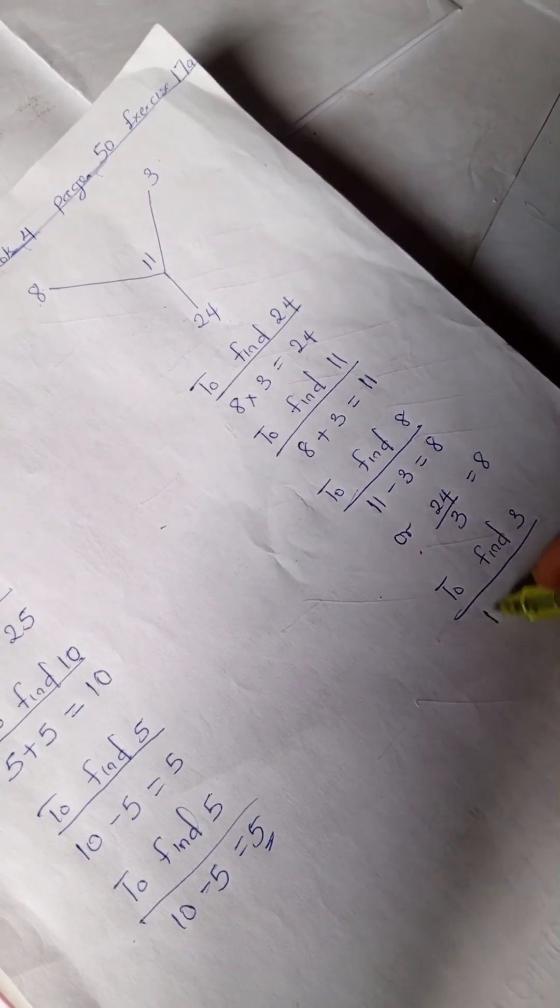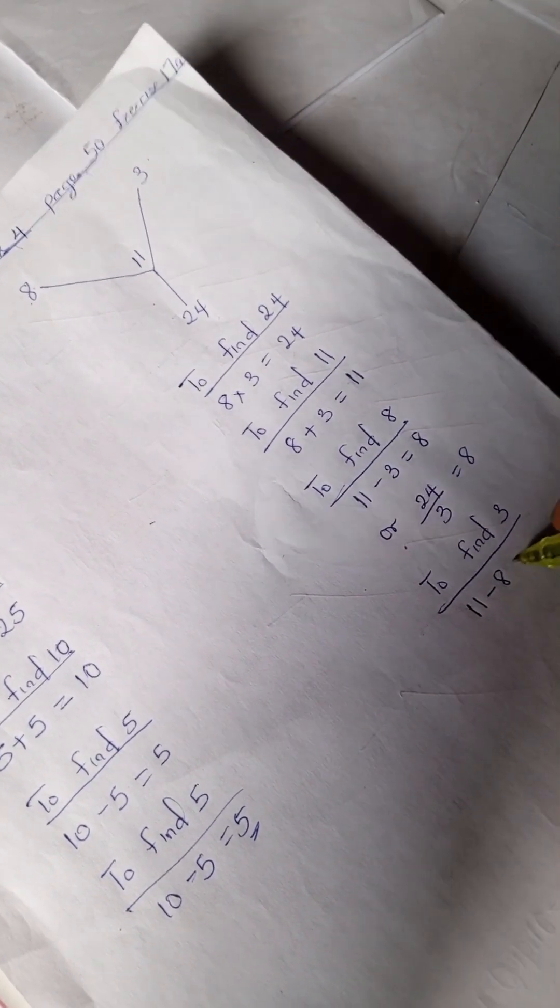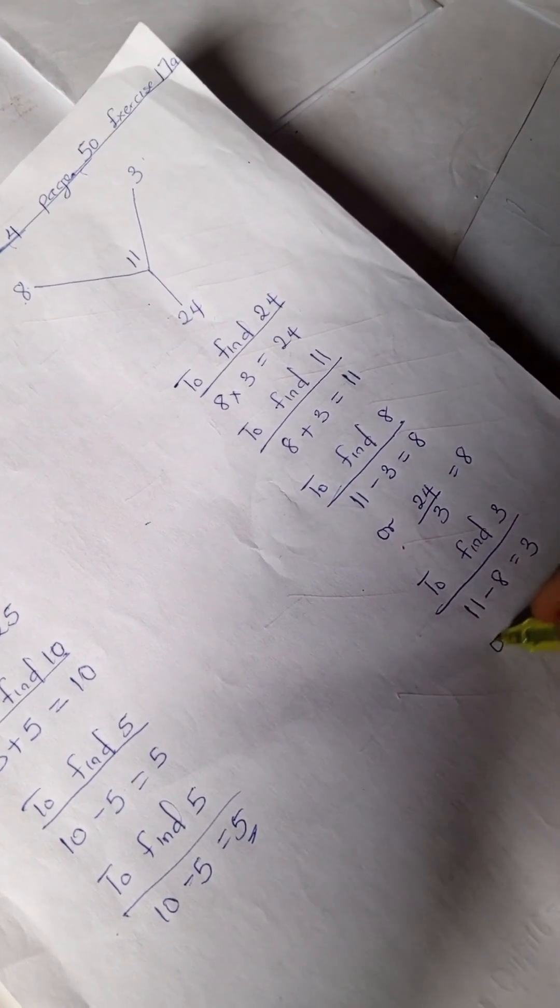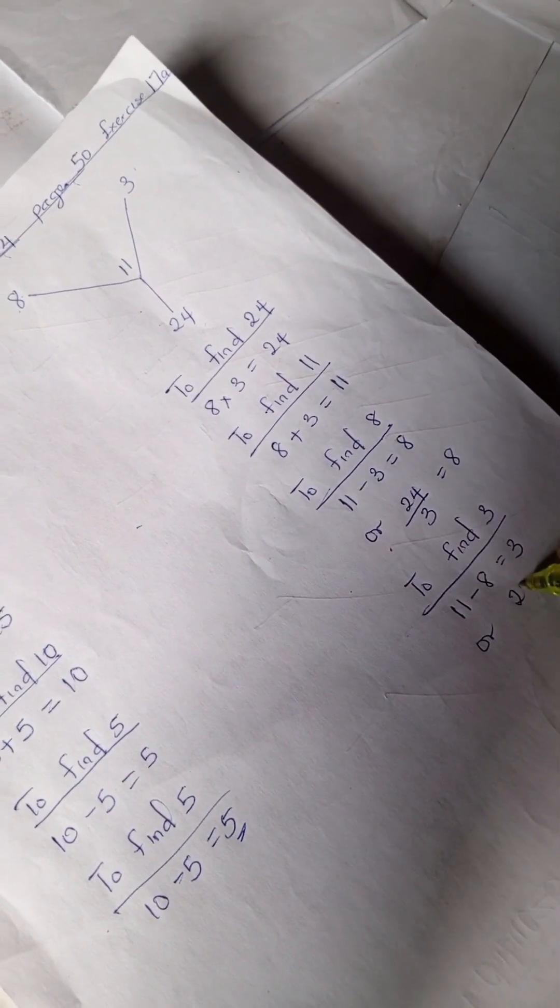And to find 3, we can do the same. 11 minus 8 is 3, or we can say 24 divided by 8 is 3.